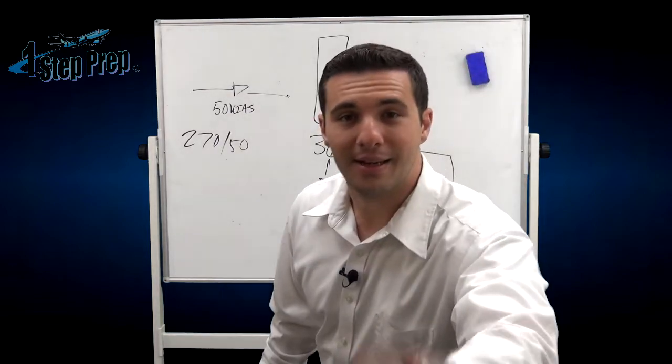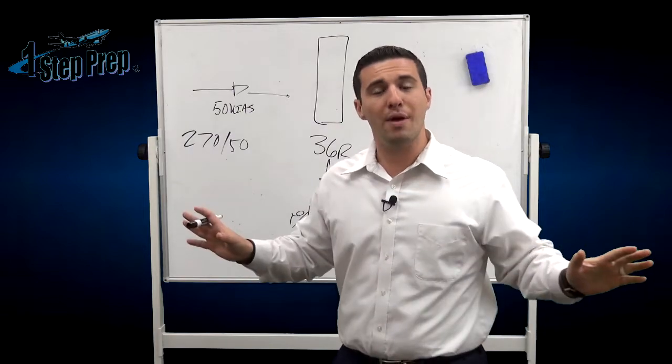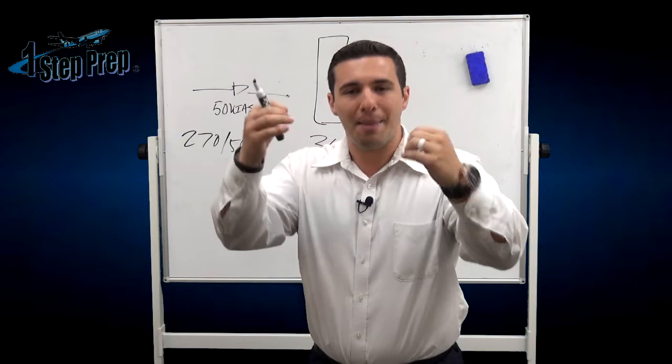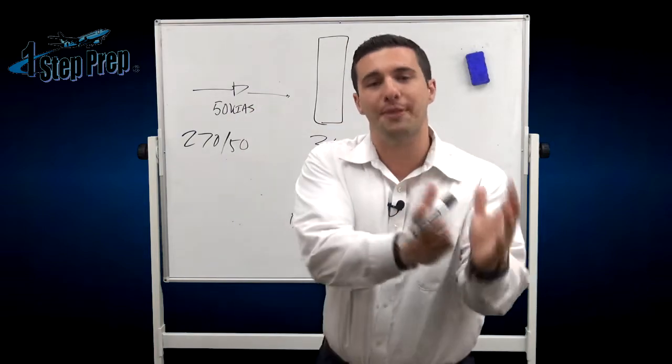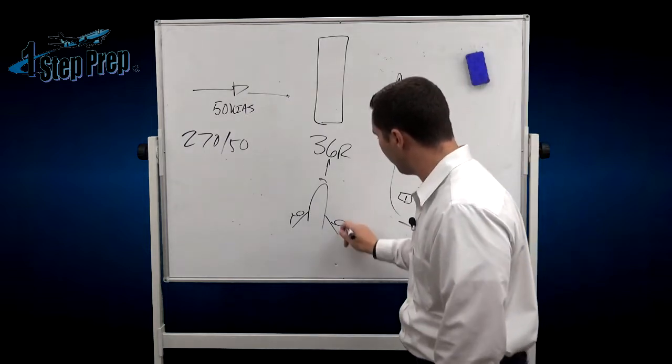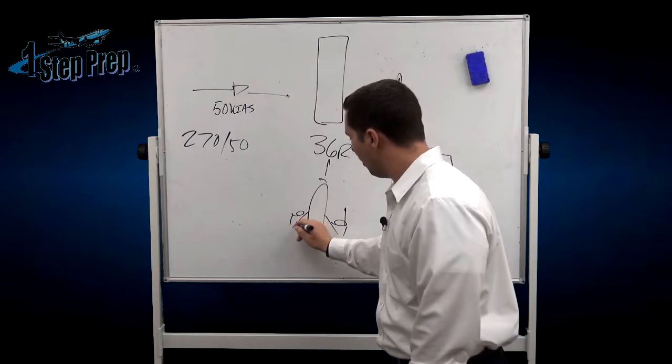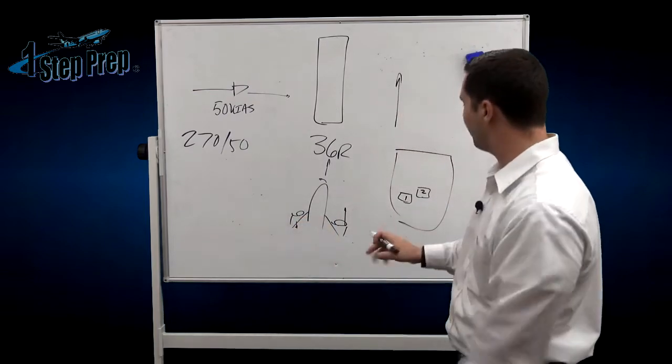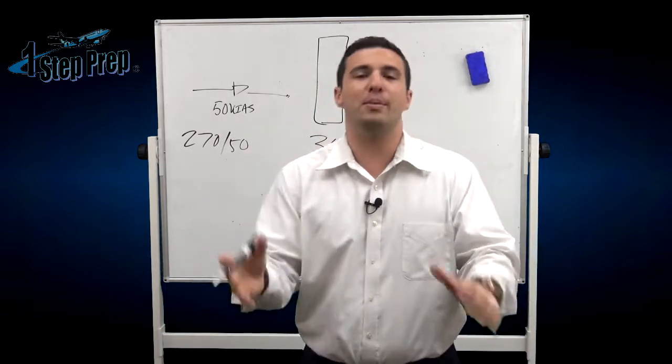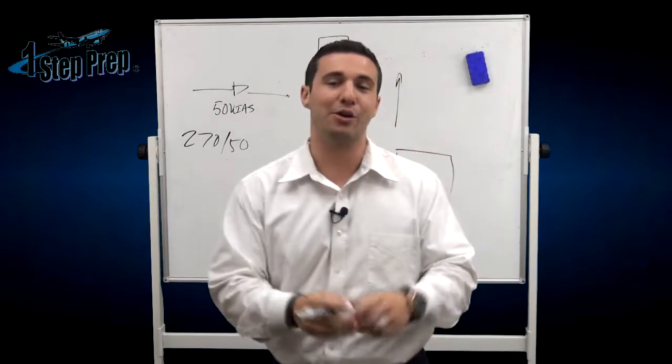Believe me. Try this in the simulator, I promise you. Put yourself on final, have your instructor put you, maybe five mile final, perfect, and then disconnect everything autopilot, auto throttle, and just let go. And what you'll find is the airplane will instantly go this way. It'll weather vane into the wind. The aircraft always wants to weather vane into the wind, period. Believe me when I tell you this. Try it out in a sim.